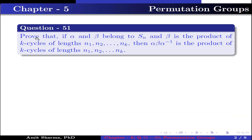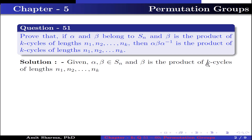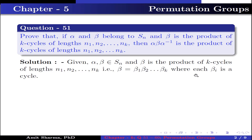Question number 51. Prove that if alpha and beta belong to Sn, and beta is the product of k cycles of lengths n1, n2, up to nk, then alpha beta alpha-inverse is also the product of k cycles of lengths n1, n2, up to nk. Given: alpha, beta belong to Sn, and beta is the product of k cycles of lengths n1, n2, up to nk. That is, beta can be written as the product beta_1 beta_2 up to beta_k, where each beta_i is a cycle.